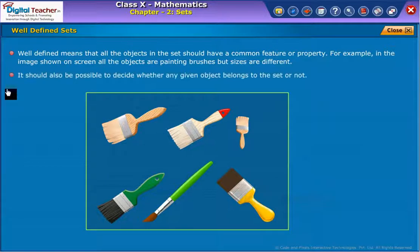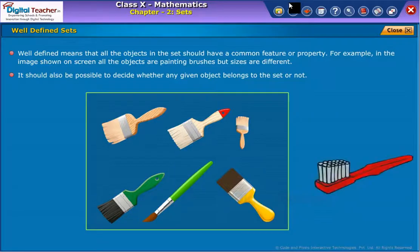It should also be possible to decide whether any given object belongs to the set or not. For example, if you consider a toothbrush, it doesn't belong to the set because both the objects, toothbrush and painting brushes, have different properties. That is one is for painting and the other is for brushing the teeth.